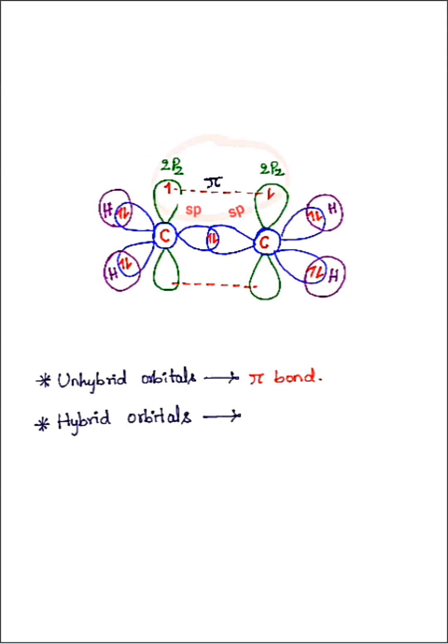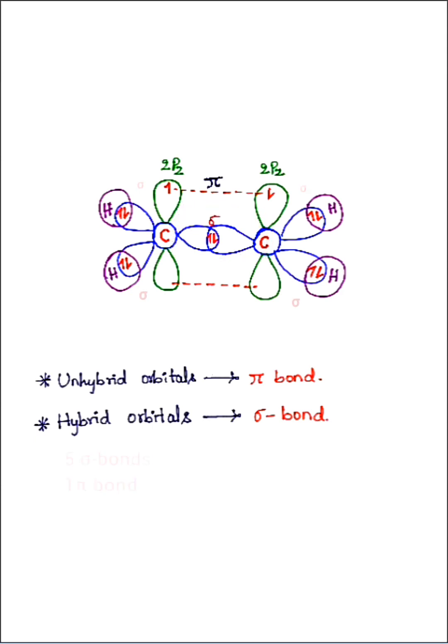Note that unhybridized orbitals always form pi bonds — for example, the two 2pz orbitals form a pi bond — while hybrid orbitals always form sigma bonds — for example, the sp2 orbitals form sigma bonds. Thus ethylene contains five sigma bonds and one pi bond. Finally, the shape of ethylene (C2H4) is trigonal planar with a bond angle of 120 degrees.